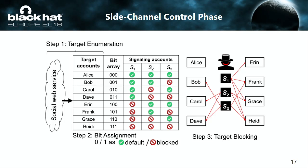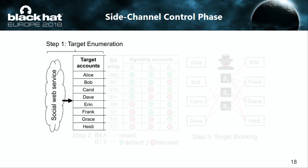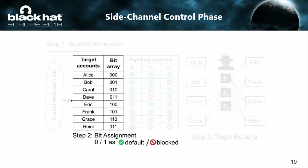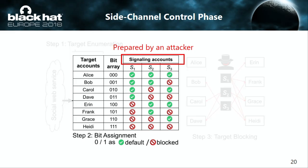First, the attacker enumerates accounts on the social web service. These accounts are candidates for the visitor's account, so it is better to enumerate more. For illustration, only eight accounts are shown in this figure. Next, the attacker assigns a bit string — a bit array — to these accounts from 000 to 111. The attacker prepares as many accounts as the number of digits in the bit string, called S1, S2, and S3. We call them signaling accounts. The blocking state of each signaling account corresponds to each digit of the bit string: zero as non-blocking and one as blocking.